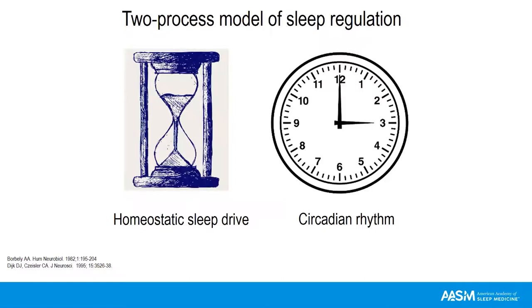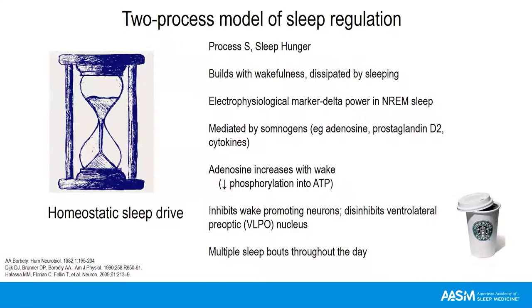Before we get into circadian rhythms, let's review the neurobiology of sleep. There's a two-process model that controls our sleep, comprised of the homeostatic sleep drive — the hourglass — and the circadian rhythm, or the clock. The homeostatic sleep drive, also referred to as process S, can be thought of as sleep hunger, because it increases with accumulated wakefulness and then dissipates by sleeping. Its electrophysiological manifestation is delta, or slow-wave, power in non-REM sleep, which decays rapidly after the first few hours of sleep.